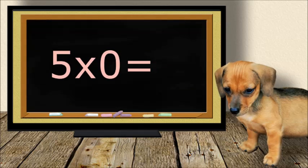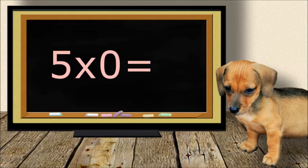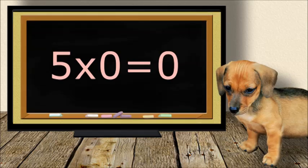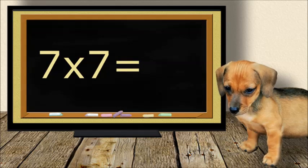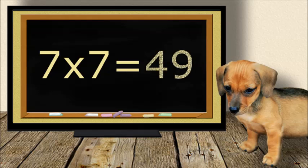5 times 0 equals 0. 7 times 7 equals 49.